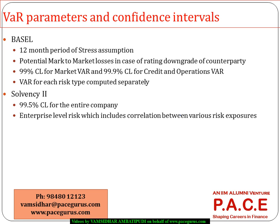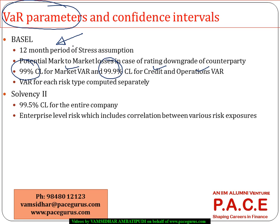One area where we see differences between the two frameworks is the computation of VAR. While Basel talks about separate VAR for market risk, credit risk, and operations risk — individually computed at 99% confidence level for market risk and 99.9% confidence level for credit and operations risk — it says for each risk you compute the capital requirements separately. It also mentions that a stressed VAR for a 12-month period needs to be computed.